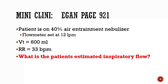There's a mini clinic on Egan page 921: a patient is on a 40% air entrainment nebulizer with the flow meter set at 12. Tidal volume is 600 and respiratory rate is 33. To find their inspiratory flow, take 600 times 33 to get a minute ventilation of 19.8 liters. Multiply 19.8 by three, which puts their inspiratory flow demand at 59.4 liters per minute.